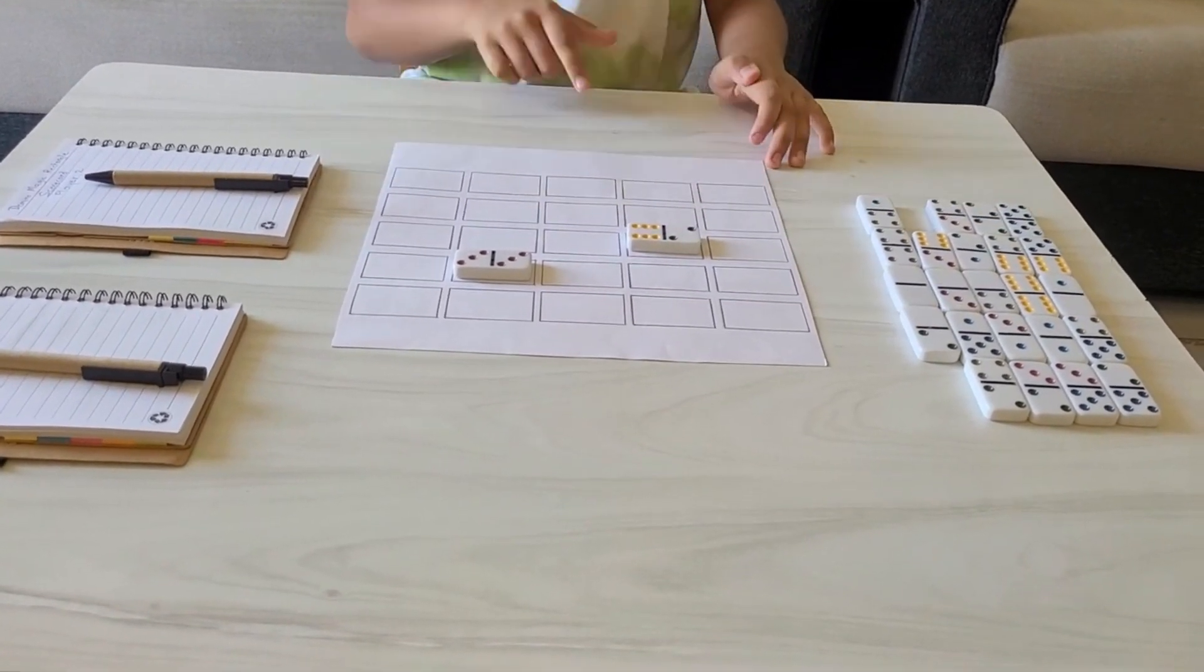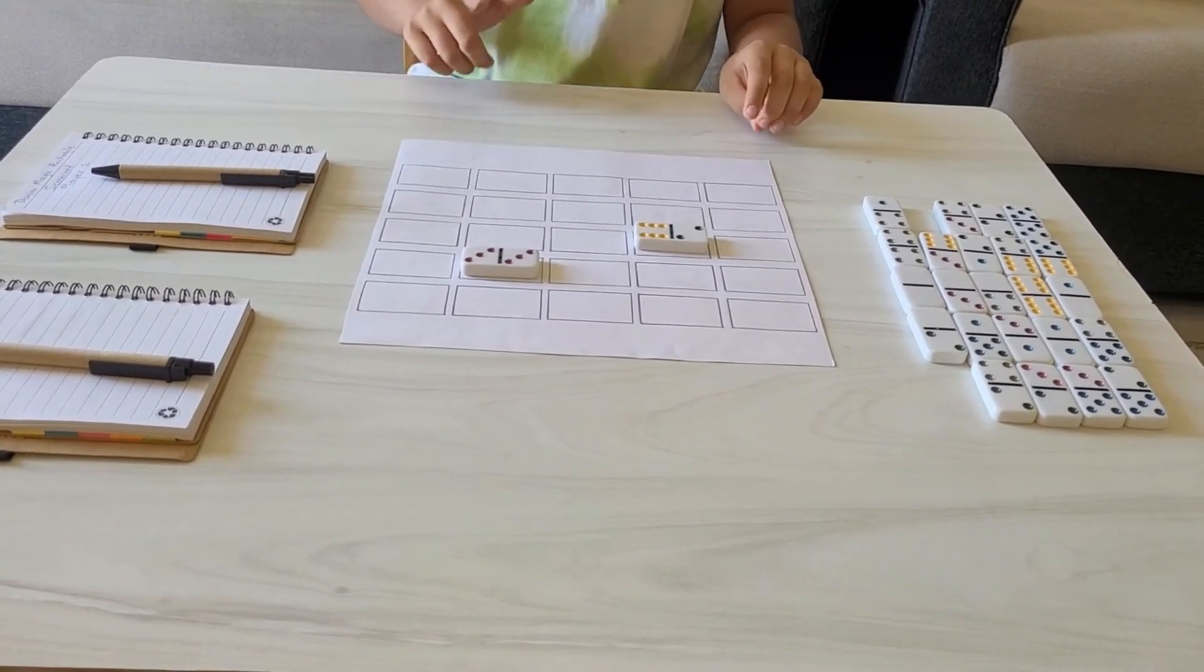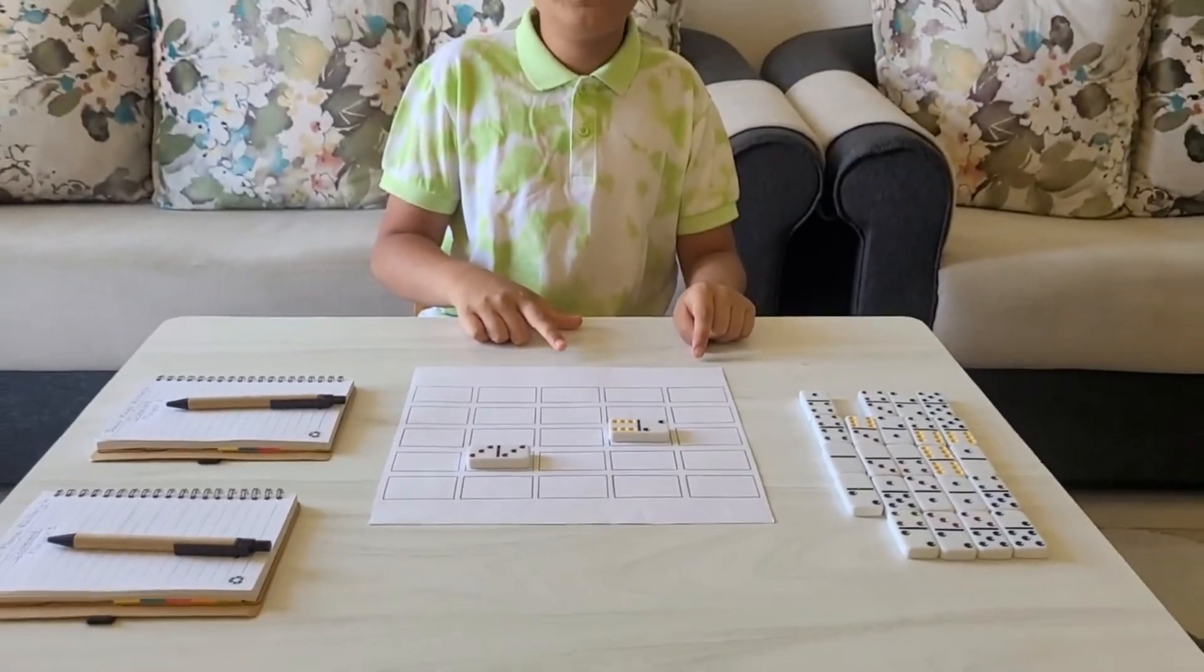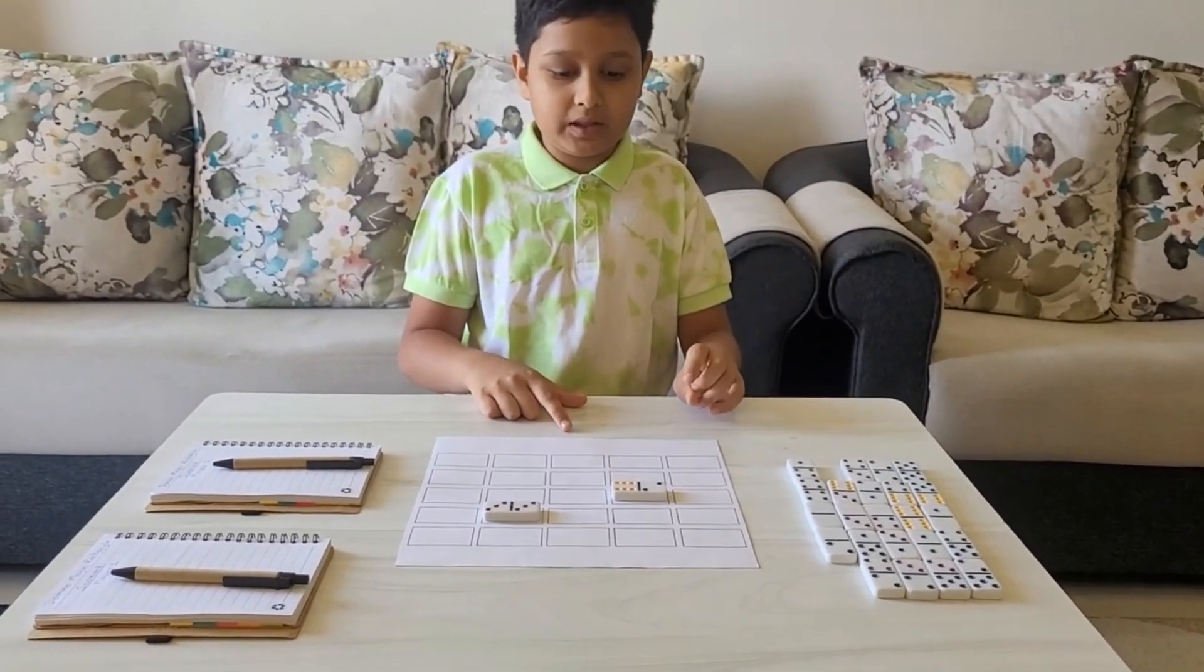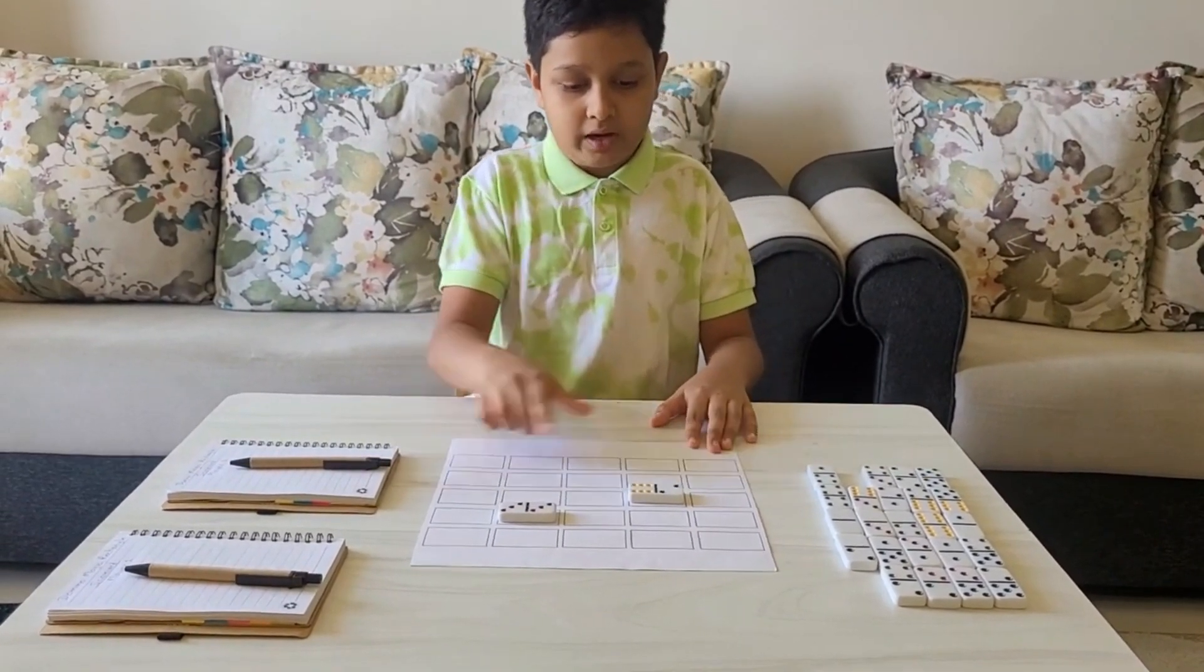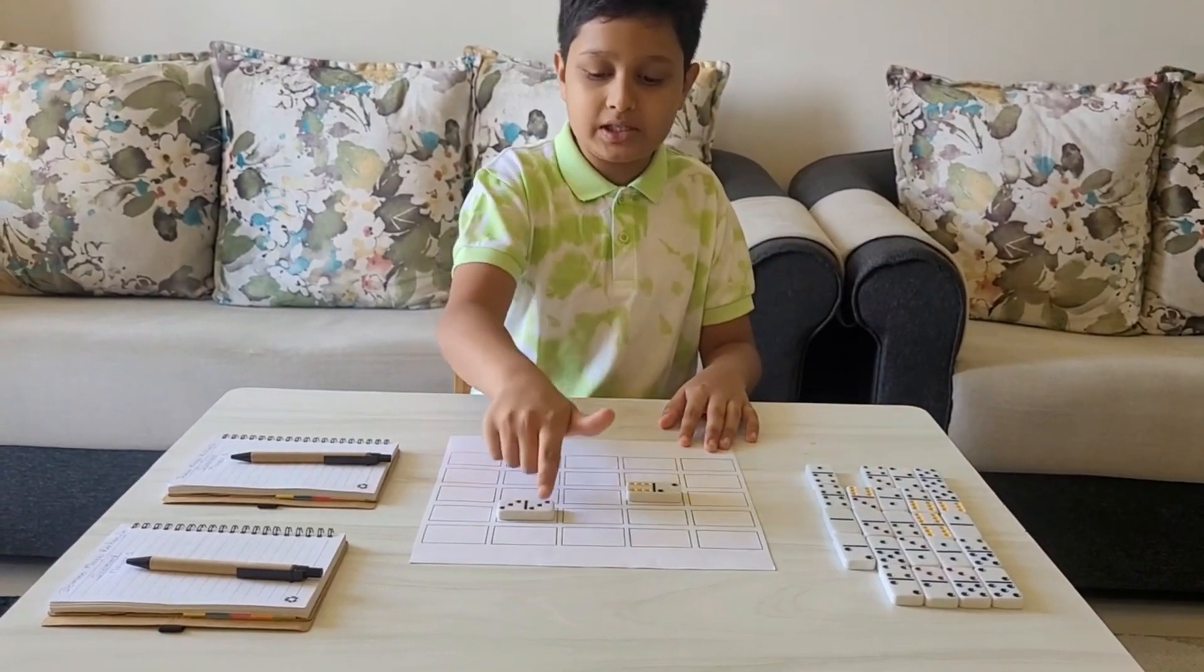...of how to make every row, every column, and every diagonal sum 30. Like right now, this row has eight and this column also has eight. This row has six and this column also has six.